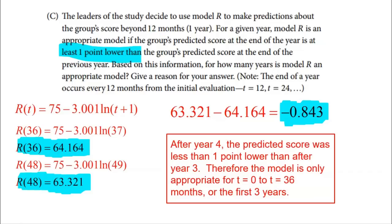That's it for this question. Remember the framework: Part A — create the model by building two equations from given data and solving for the parameters. Part B — focus on rates of change. Part C — determine whether the model is appropriate or not. That's exactly the structure of the second FRQ. It won't be the same problem, but it will follow the same framework of build a model, answer questions about average rate of change, and assess appropriateness.